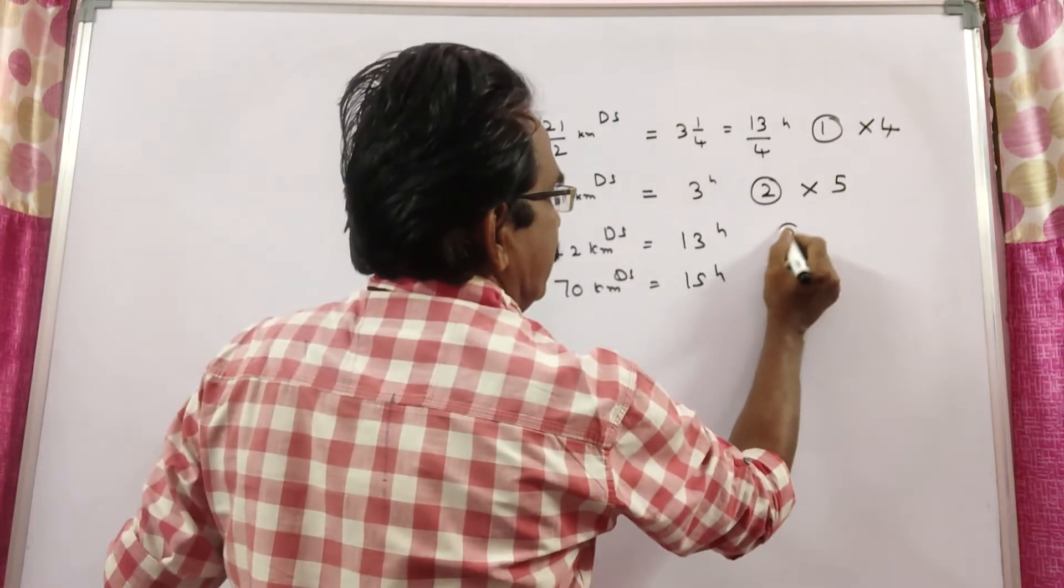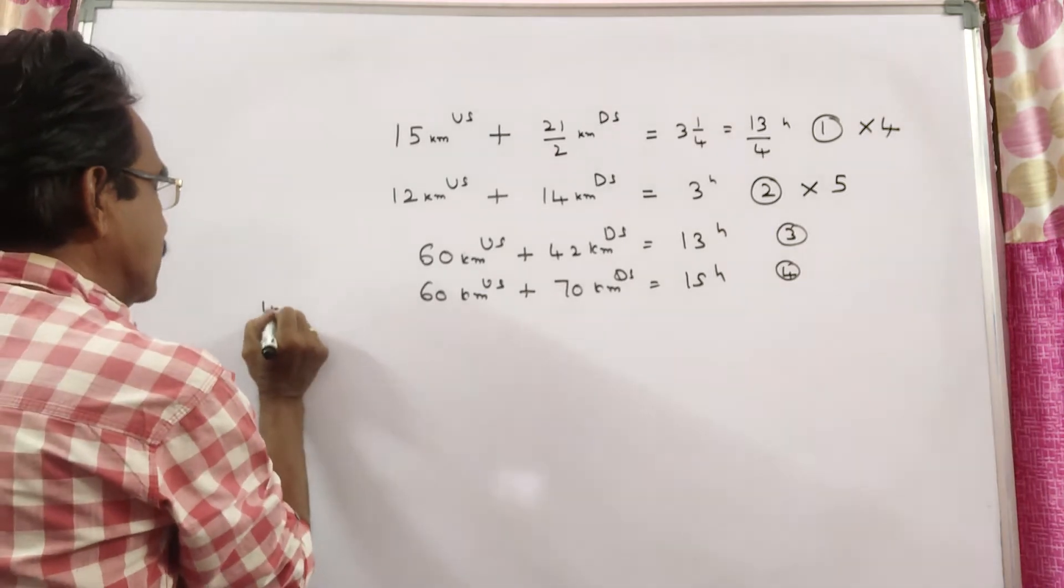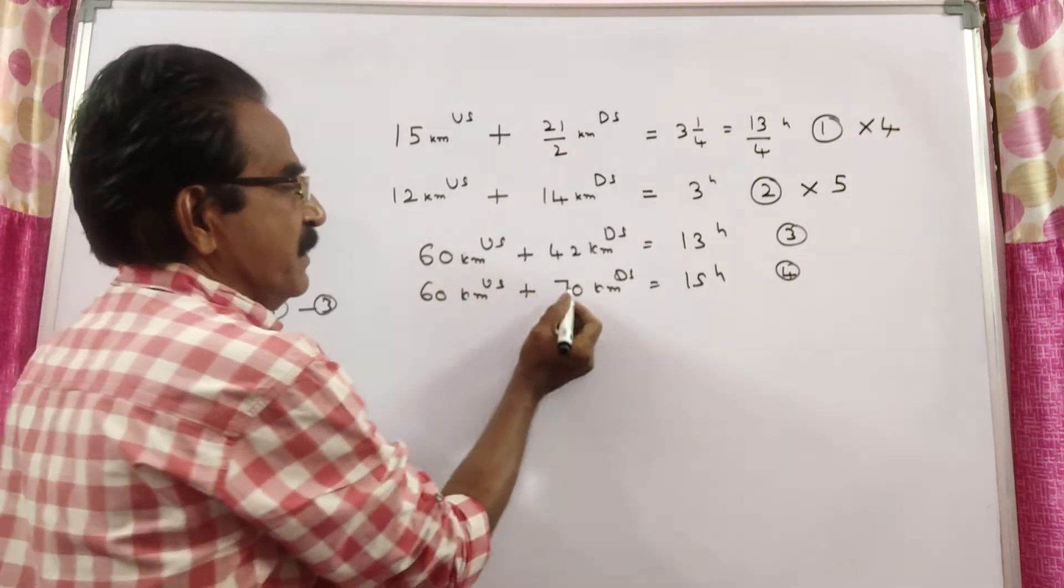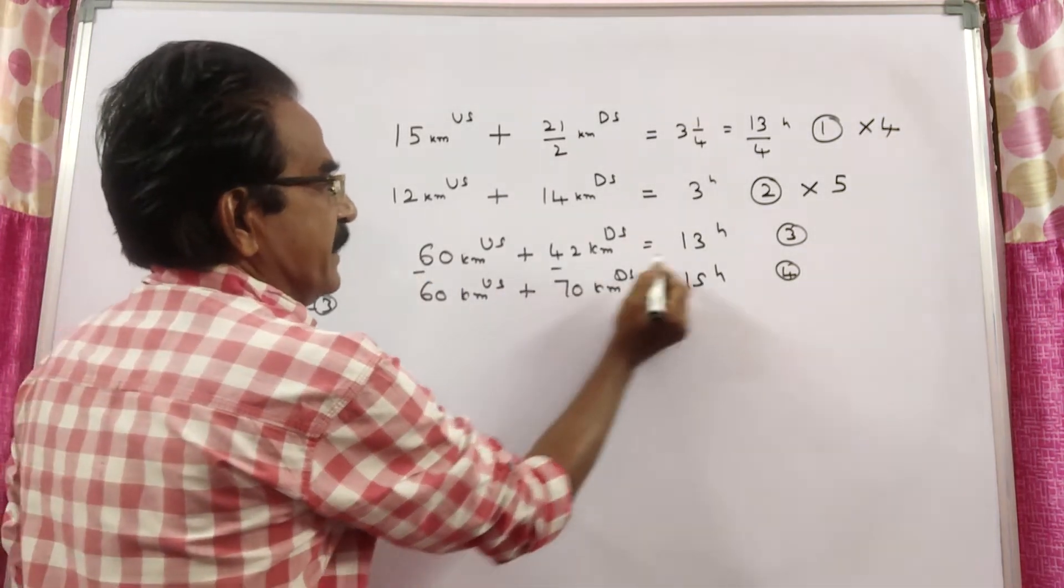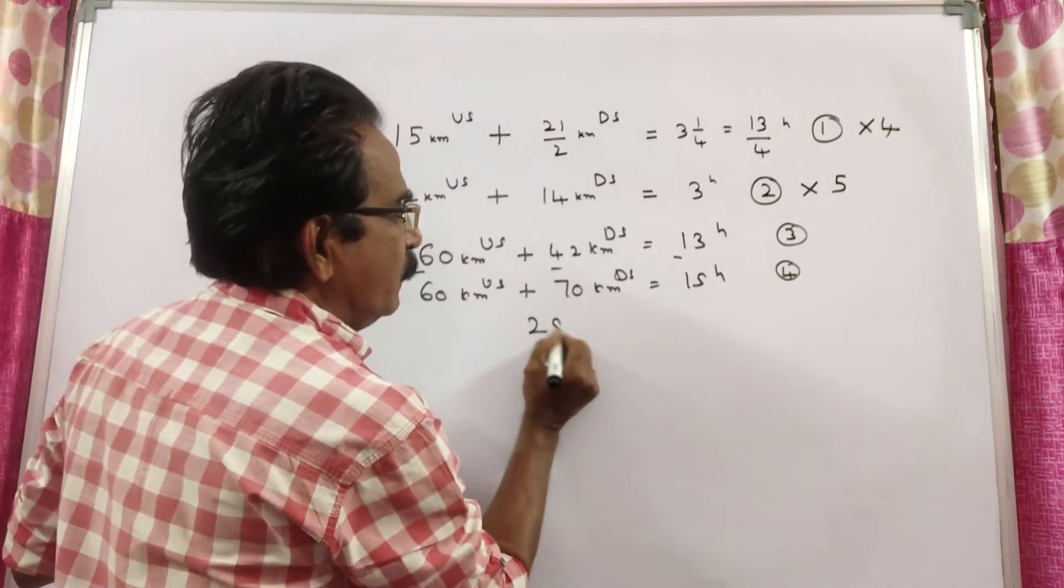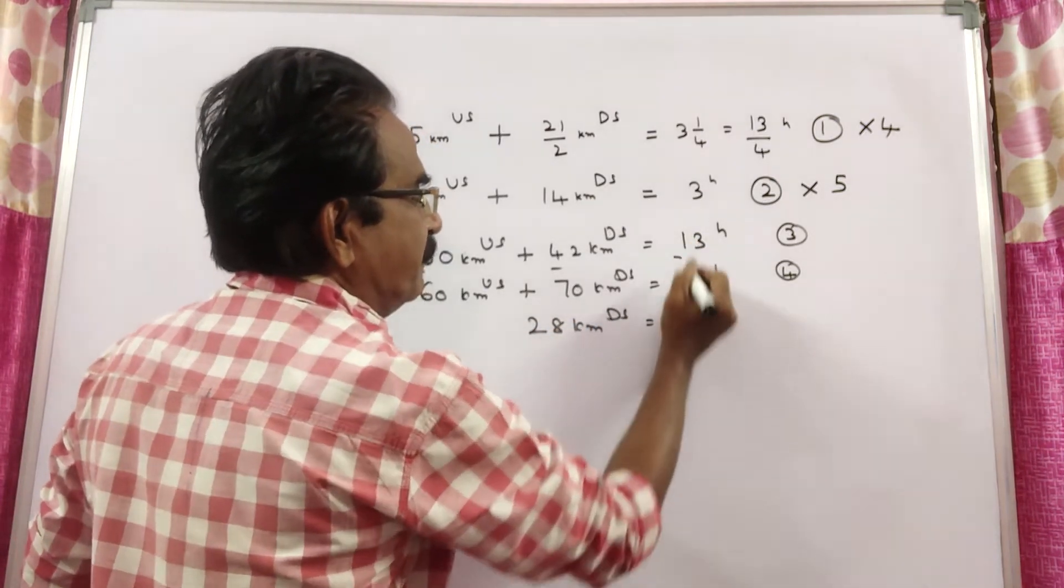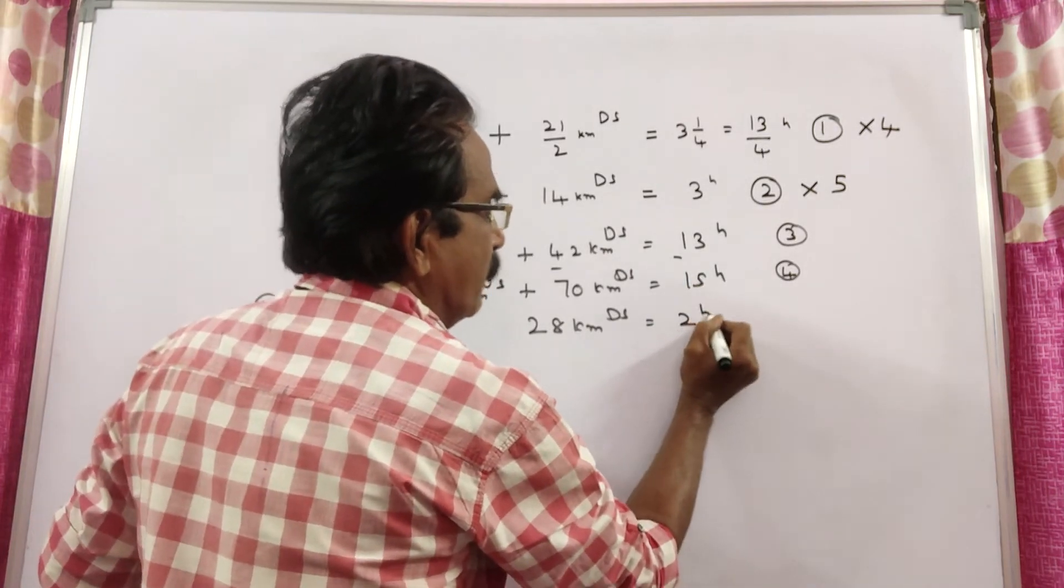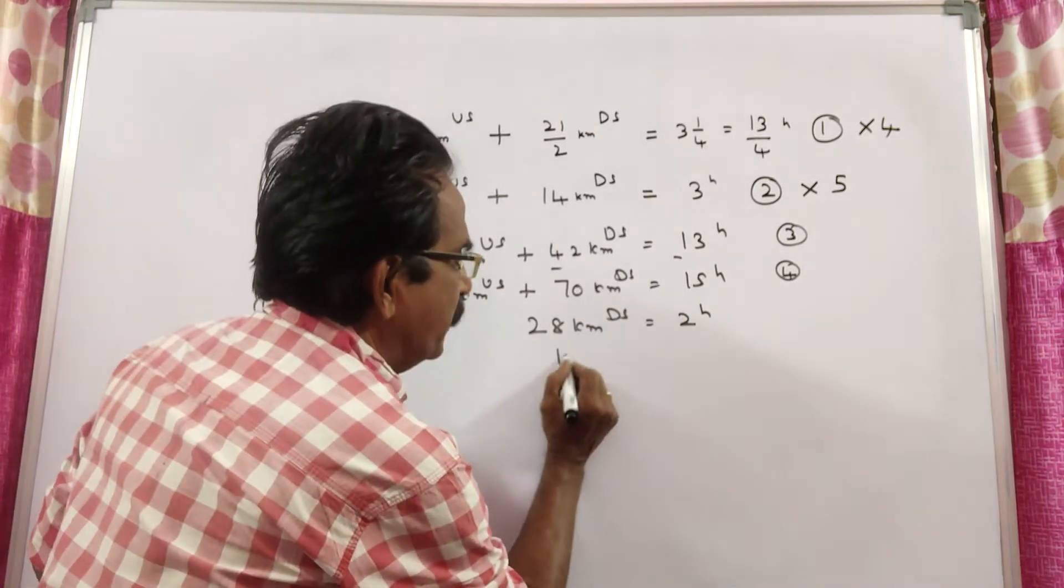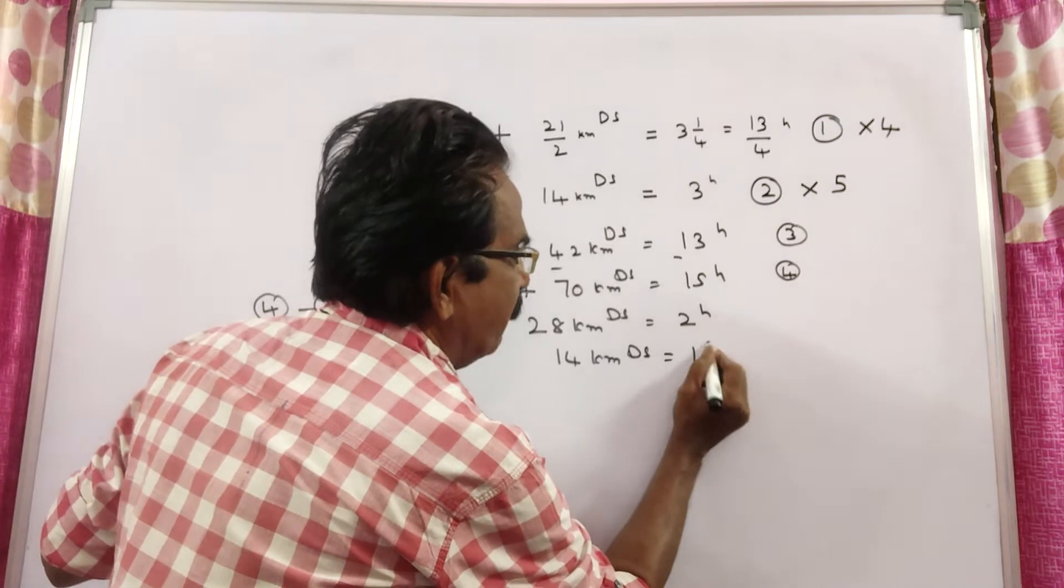This is equation 3, this is equation 4. Now, 4 minus 3. Equation 4 minus equation 3 gives this, this gets cancelled. 70 minus 42, 28 kilometers downstream it travels in 15 minus 13, in 2 hours. 28 kilometers downstream in 2 hours means 14 kilometers downstream in 1 hour.